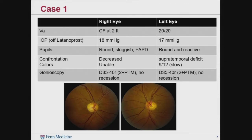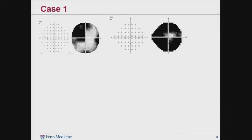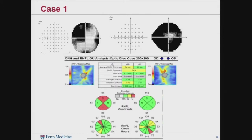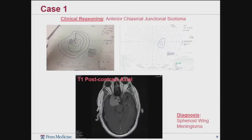His gonioscopy exam was wide open with no signs of recession. His visual fields were read previously as unreliable — the patient's English wasn't their first language and there were concerns about reliability. The OCTs showed thin areas in the right nerve. I performed a Goldmann visual field and confirmed that in the right eye he had a small island of vision, and in the left eye a supertemporal defect consistent with an anterior chiasmal junctional scotoma. Subsequent imaging revealed an optic nerve sheath meningioma.